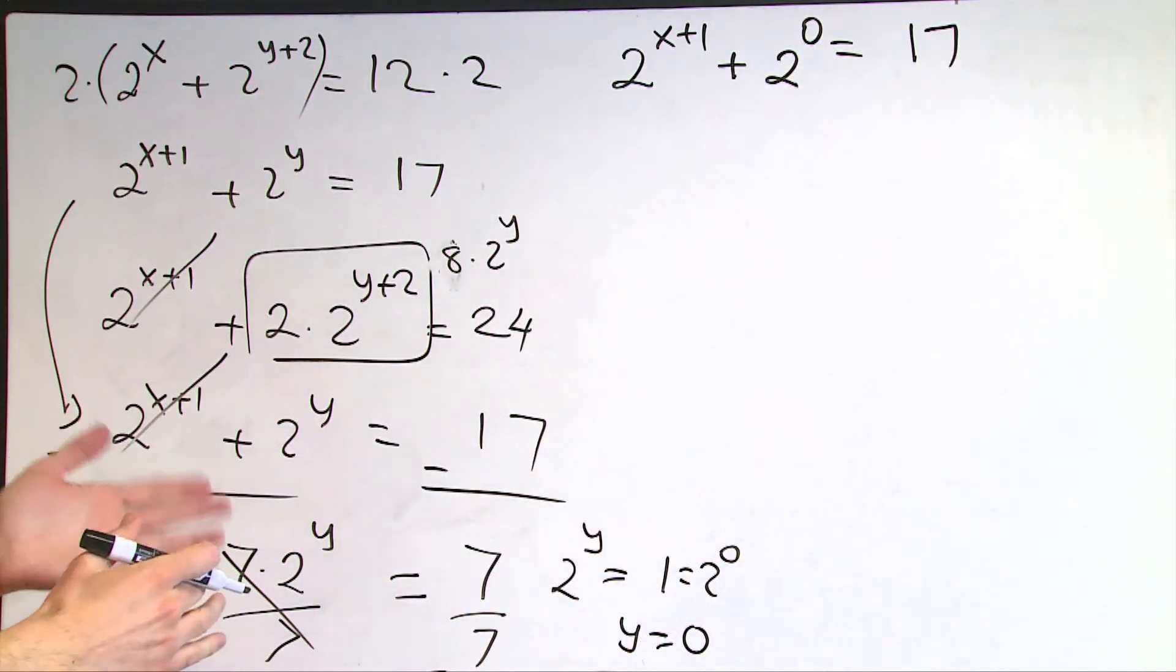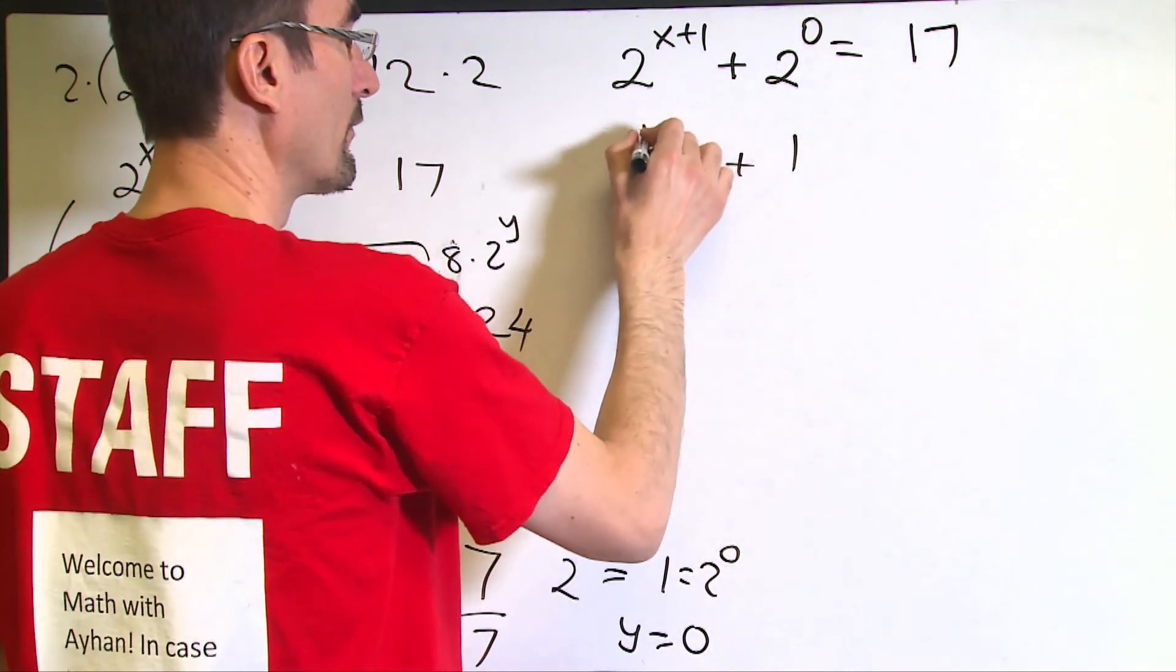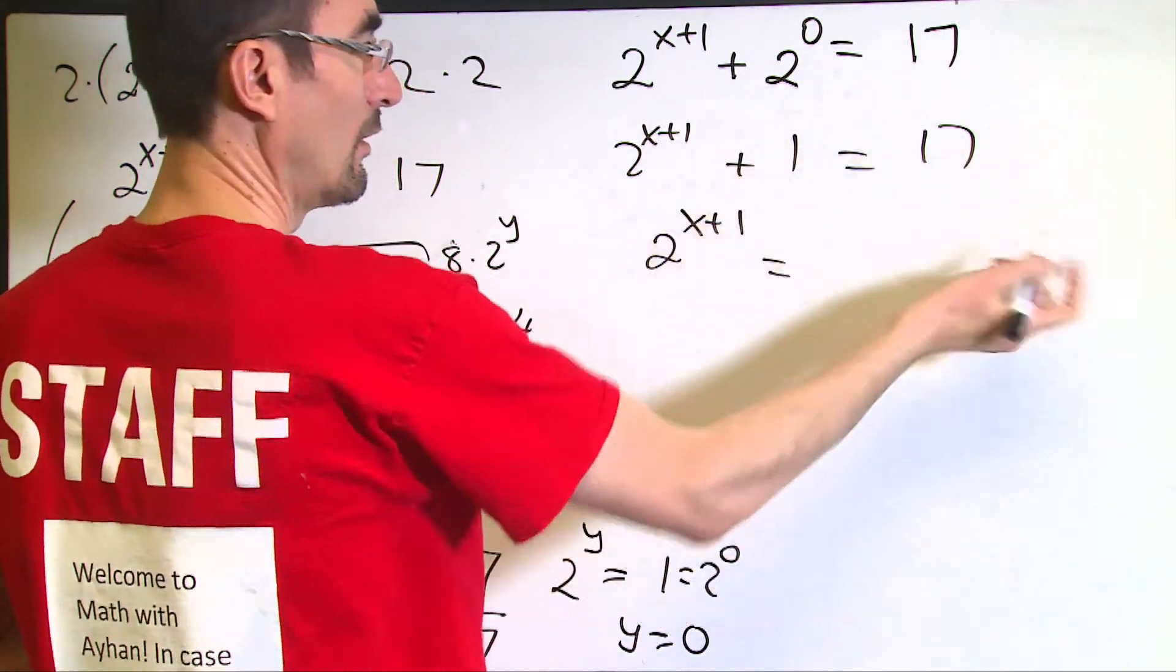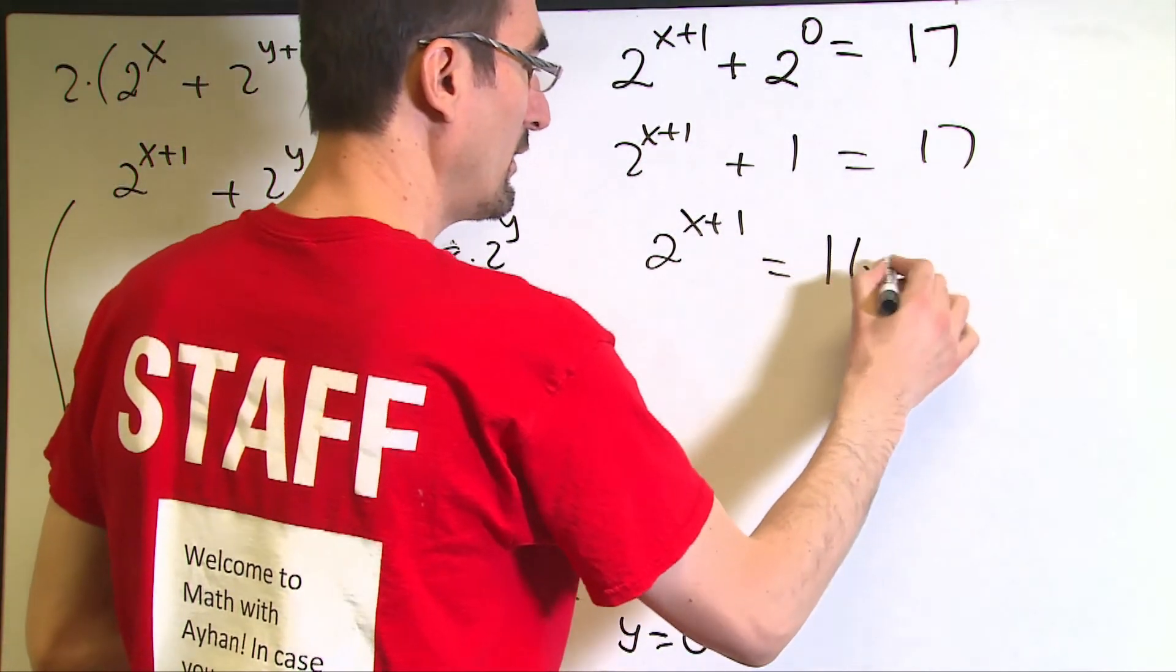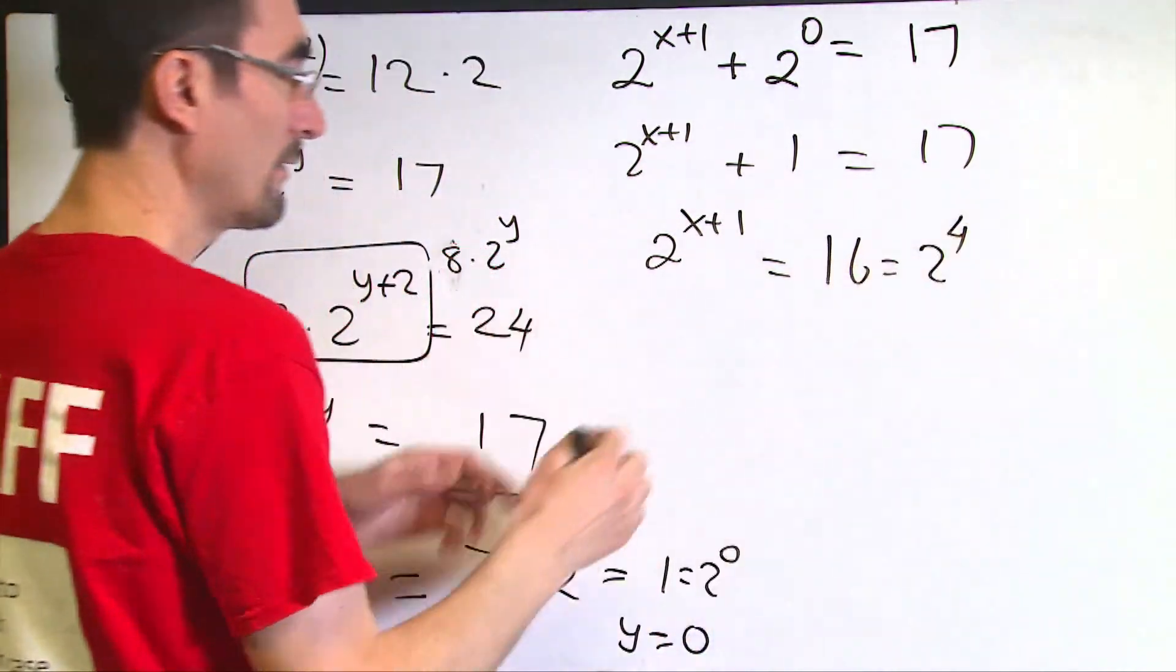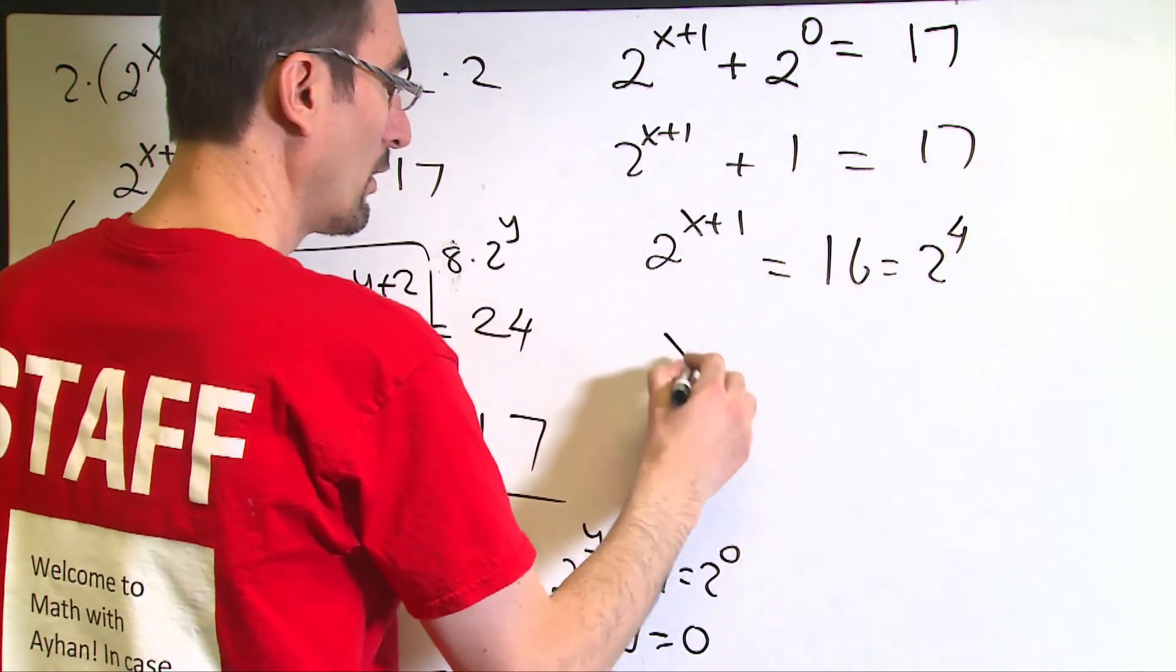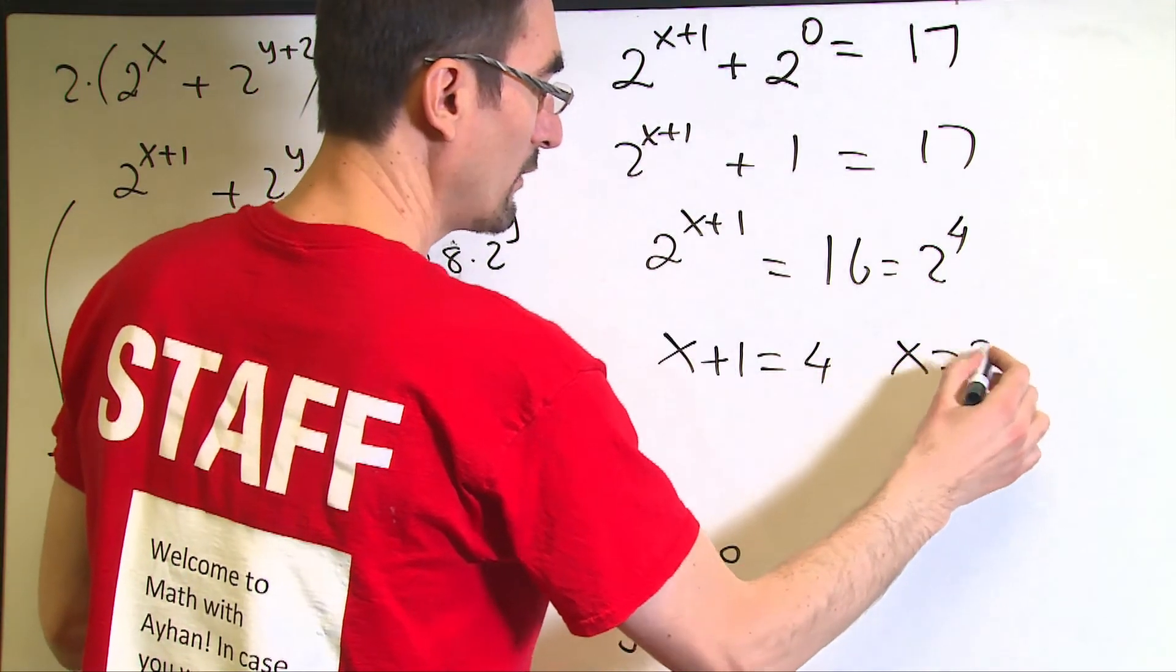I will try to solve it for x. Then 2 to the power x plus 1 is going to equal 17 minus 1, which is 16, that I can write as 2 to the 4th power. Since bases are the same, that will give me x plus 1 equals 4, which yields x equals 3.